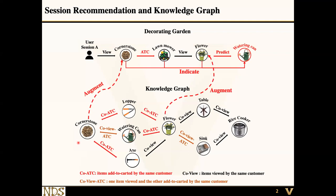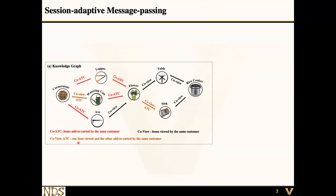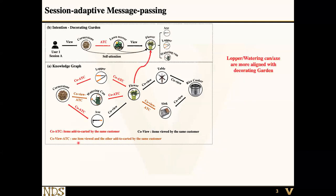The key idea to leverage the relational information from the graph is to identify relevant neighbors from the knowledge graph based on the sequence context or session context. On the top row, because this user is trying to decorate his garden, so among the five neighbors of this flower, we try to leverage more information that are relevant to garden, which are lopper, water cane, and axe.